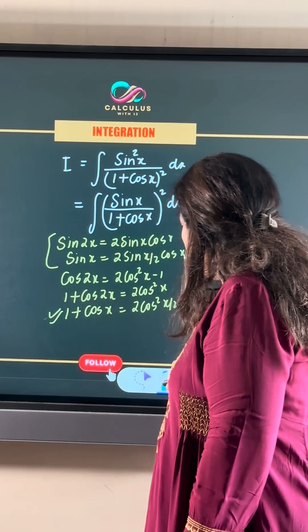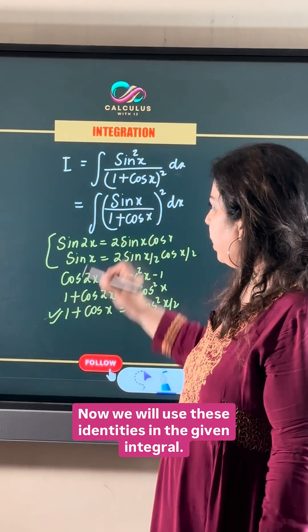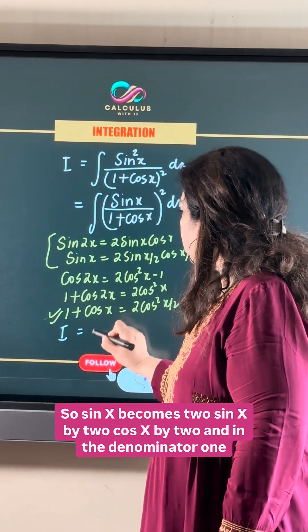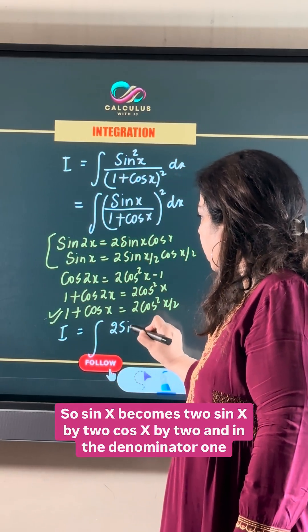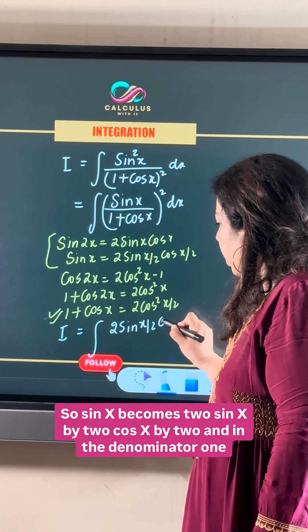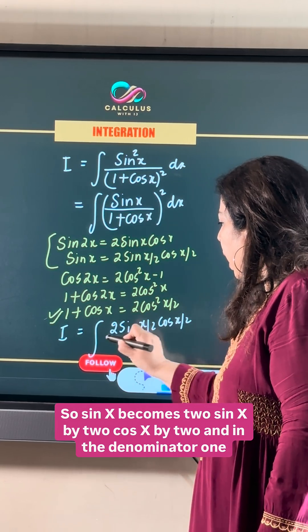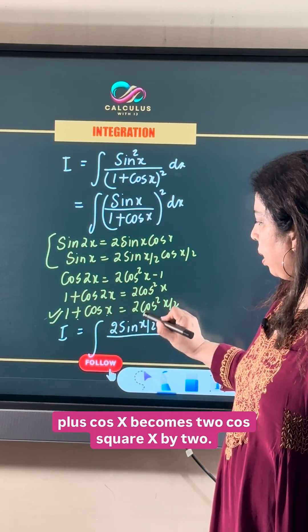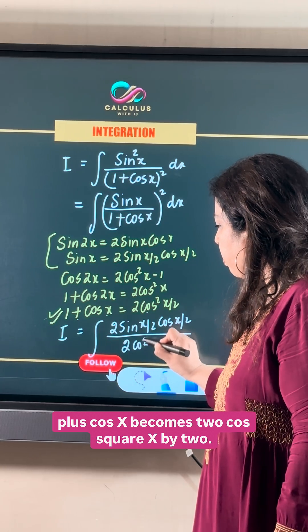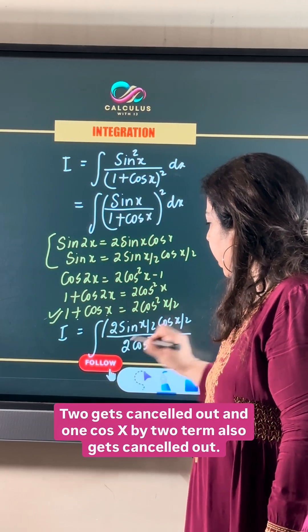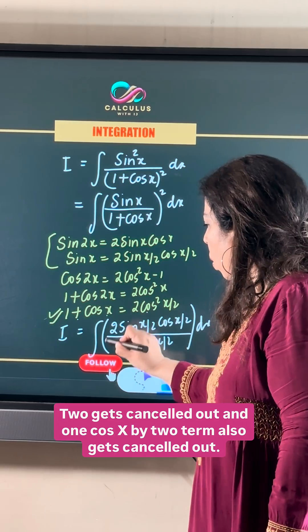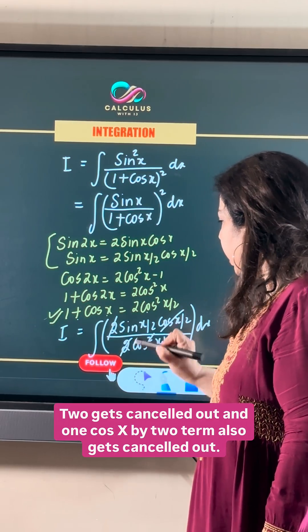We will use these identities in the given integral. Sine x becomes 2 sine x by 2 cos x by 2, and in the denominator 1 plus cos x becomes 2 cos square x by 2. The 2 gets cancelled out and one cos x by 2 term also gets cancelled out.